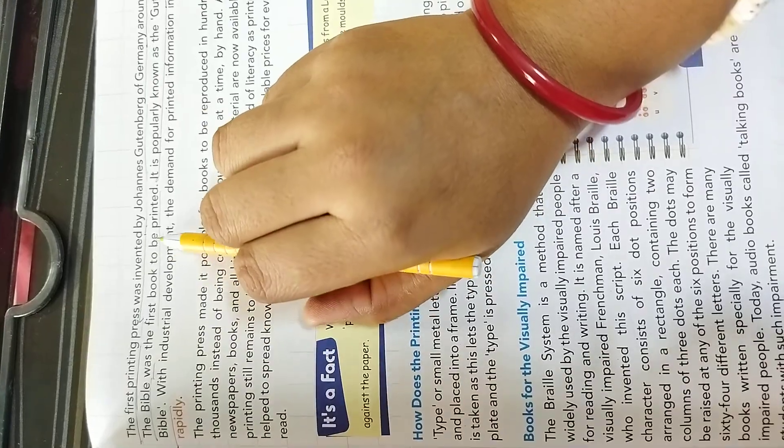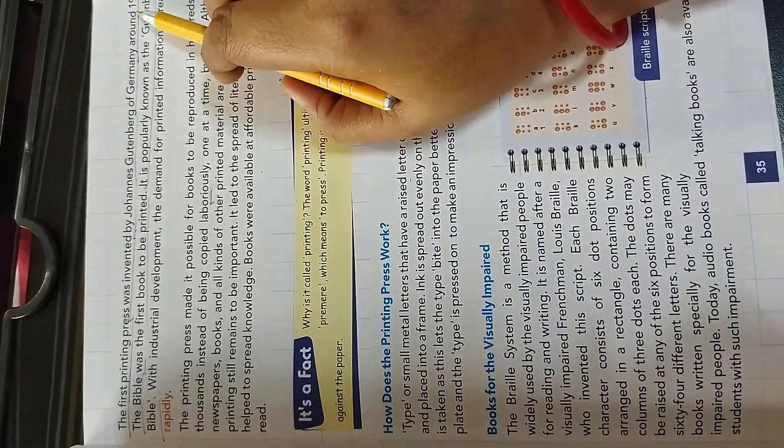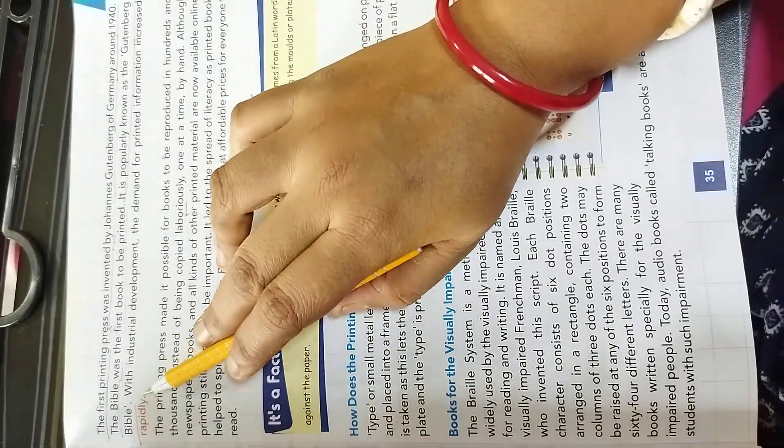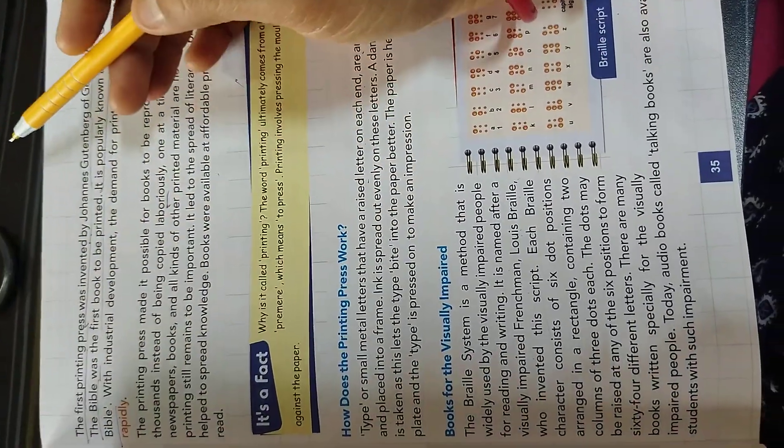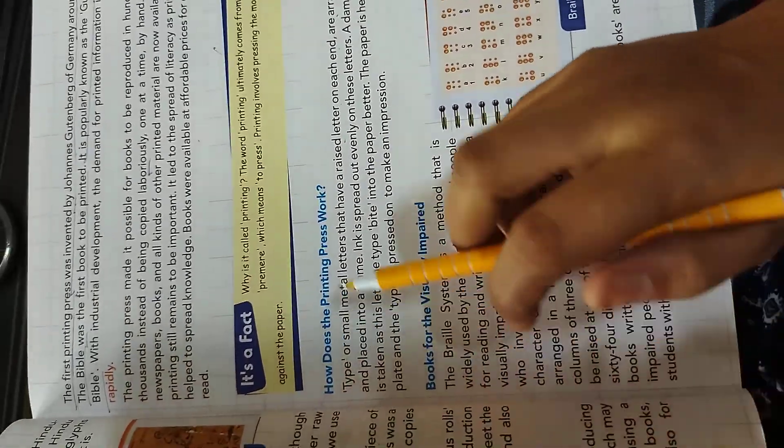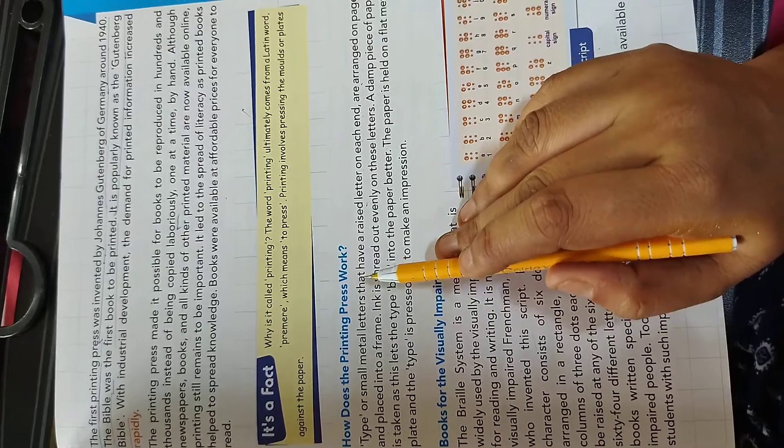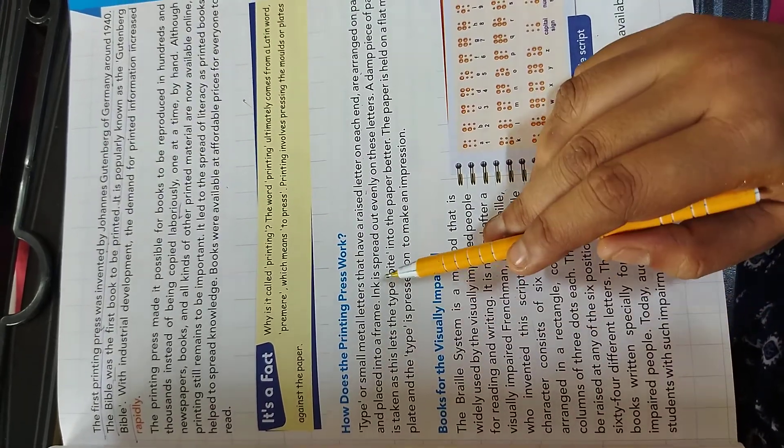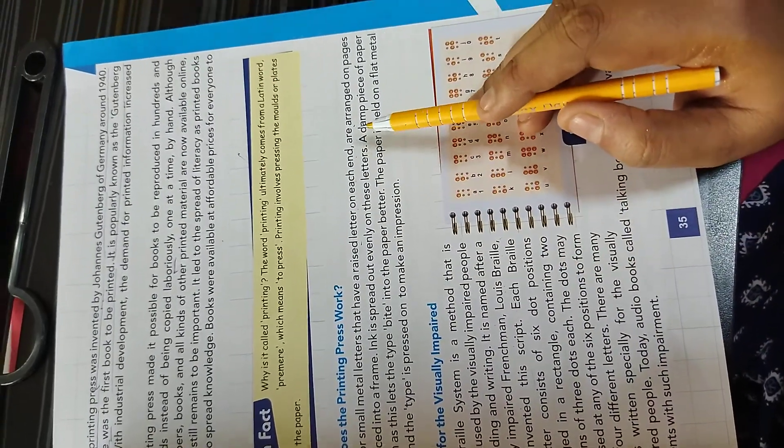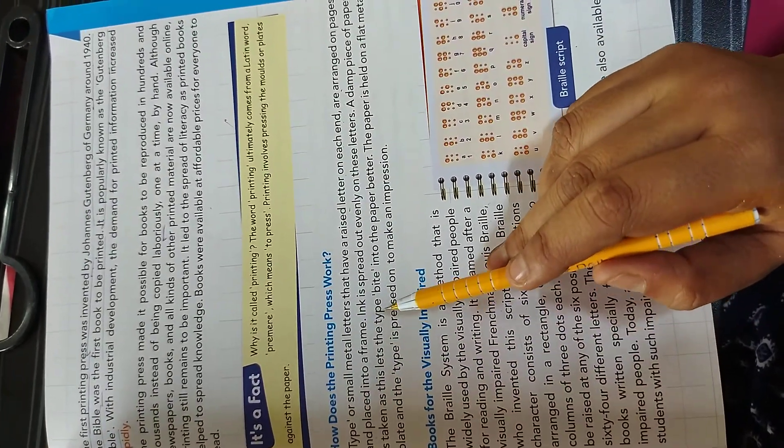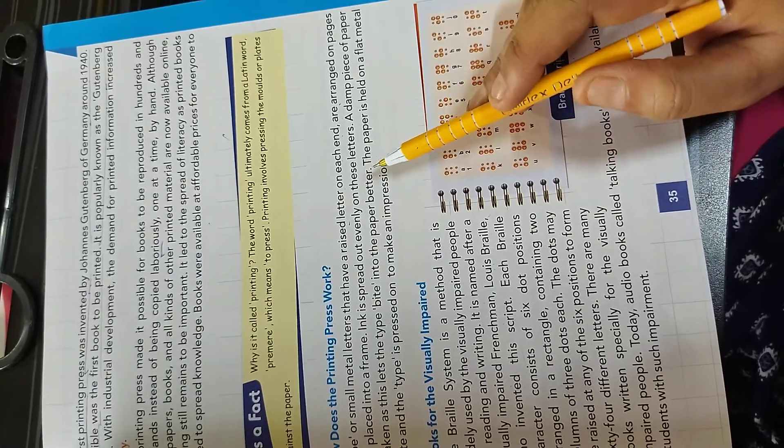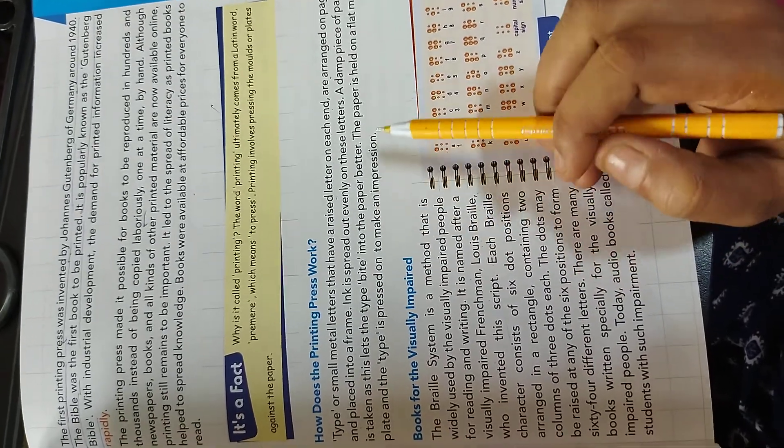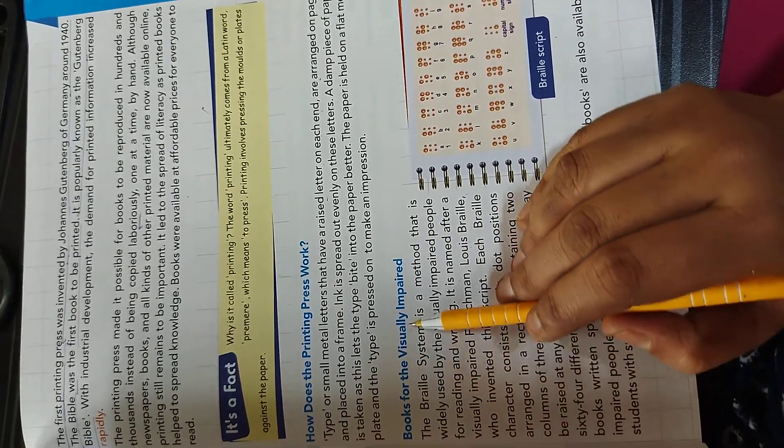The first printing press was invented by Johannes Gutenberg of Germany around 1440. The Bible was the first book to be printed. It is popularly known as the Gutenberg's Bible. How does the printing press work? Type or small metal letters that have a raised letter on each end are arranged on papers and placed into a frame. Ink is spread out evenly on these letters. A damp piece of paper is taken as this lets the type bite into the paper better. The paper is held on a flat metal plate and the type is pressed on to make an impression.